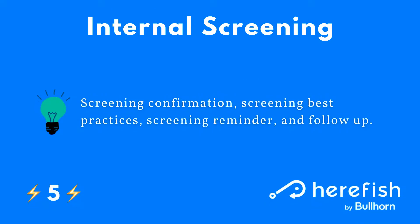The fifth must-have is all around your internal screening process — it's an internal interview. You can do similar things around that date: provide confirmation and best practices, what they need to prepare so they can ace it, a reminder so that you don't get any no-call no-shows or reduce those greatly, and then follow up afterwards to see how you can improve the process and how it was viewed from their perspective.